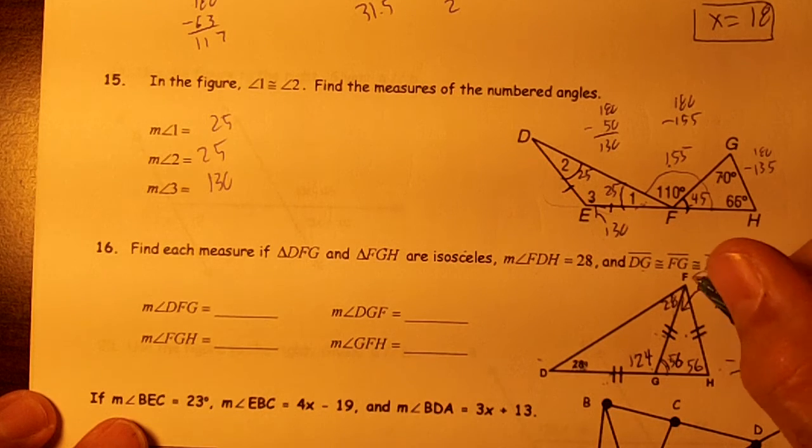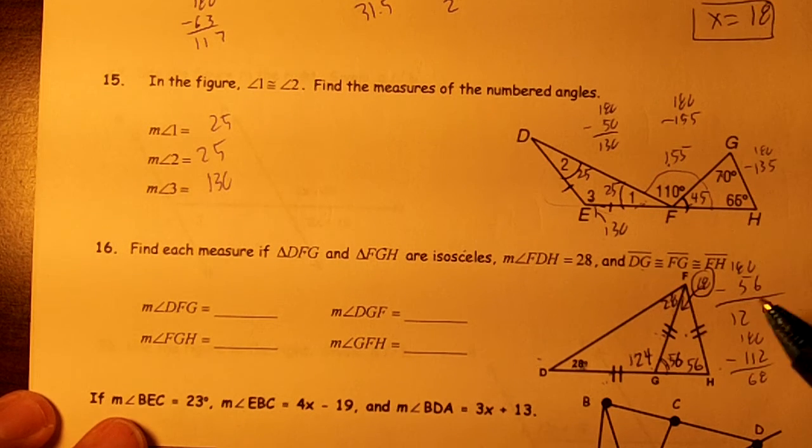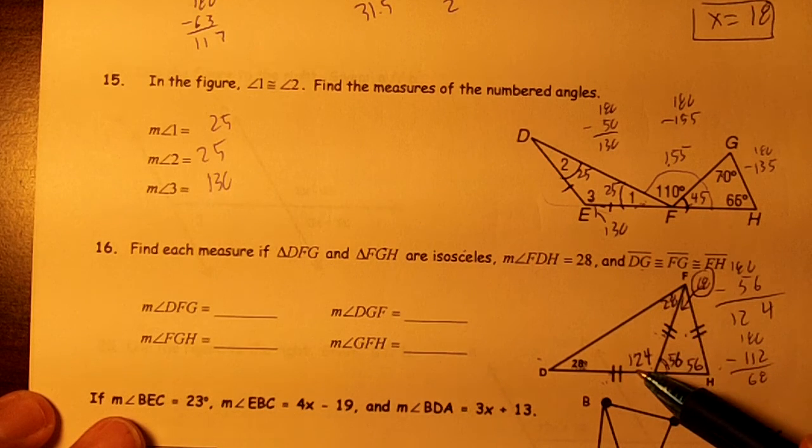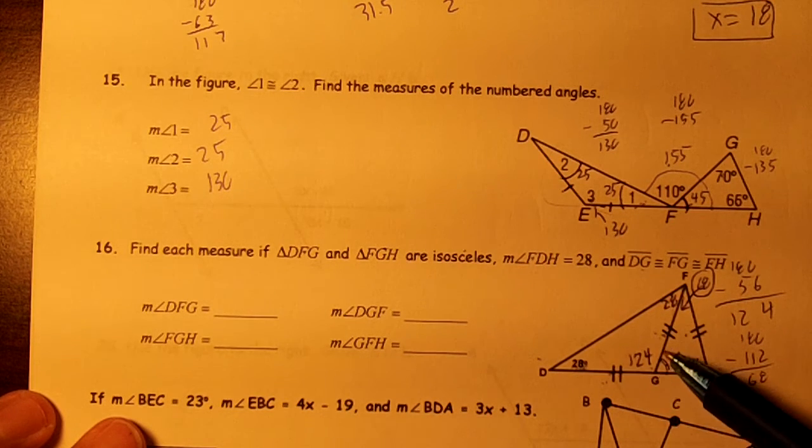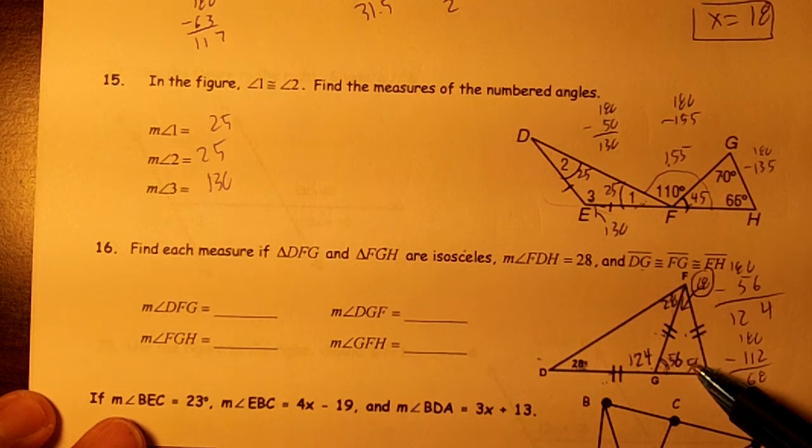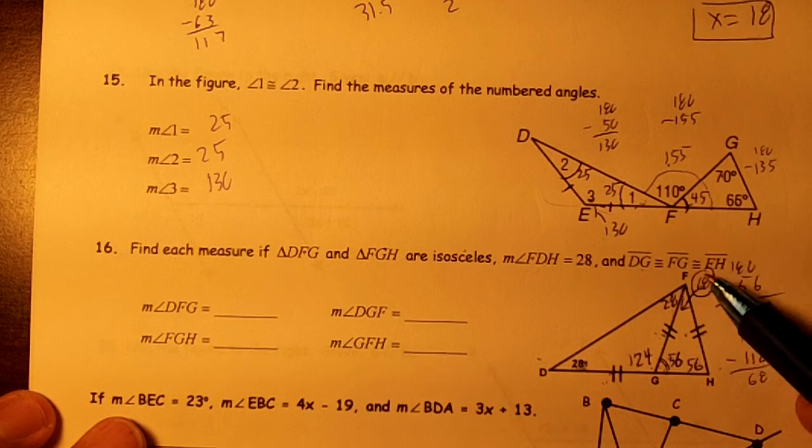So this would be 68. I went through that real quick. Okay, so this is going to be the same as this. This plus this plus this have to be 180. This plus this is 180. These two angles are the same because it's isosceles.